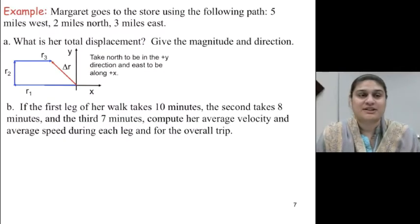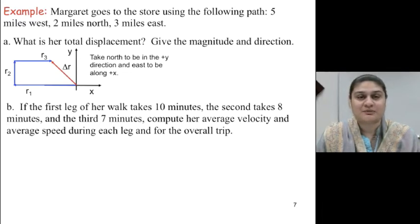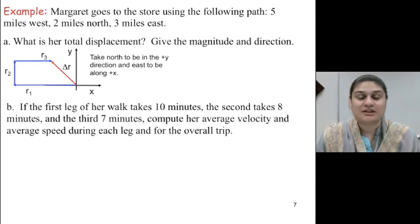Let's talk about an example. Margaret goes to the store using the following path: five miles west, two miles north, three miles east. What is her total displacement? Give the magnitude and direction.